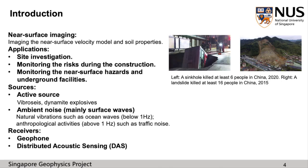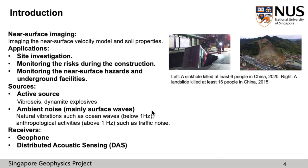We can also monitor the potential risks in the construction site. Besides, it can also be used to monitor near surface hazards, such as sinkholes and landslides, and underground facilities such as pipelines. The sources used to generate the elastic waves contain active source and ambient noise. The use of ambient noise source reduces the acquisition cost greatly, and it has made great contribution to the urban environment monitoring, where it is not convenient to use vibroseis and dangerous to use explosive sources.